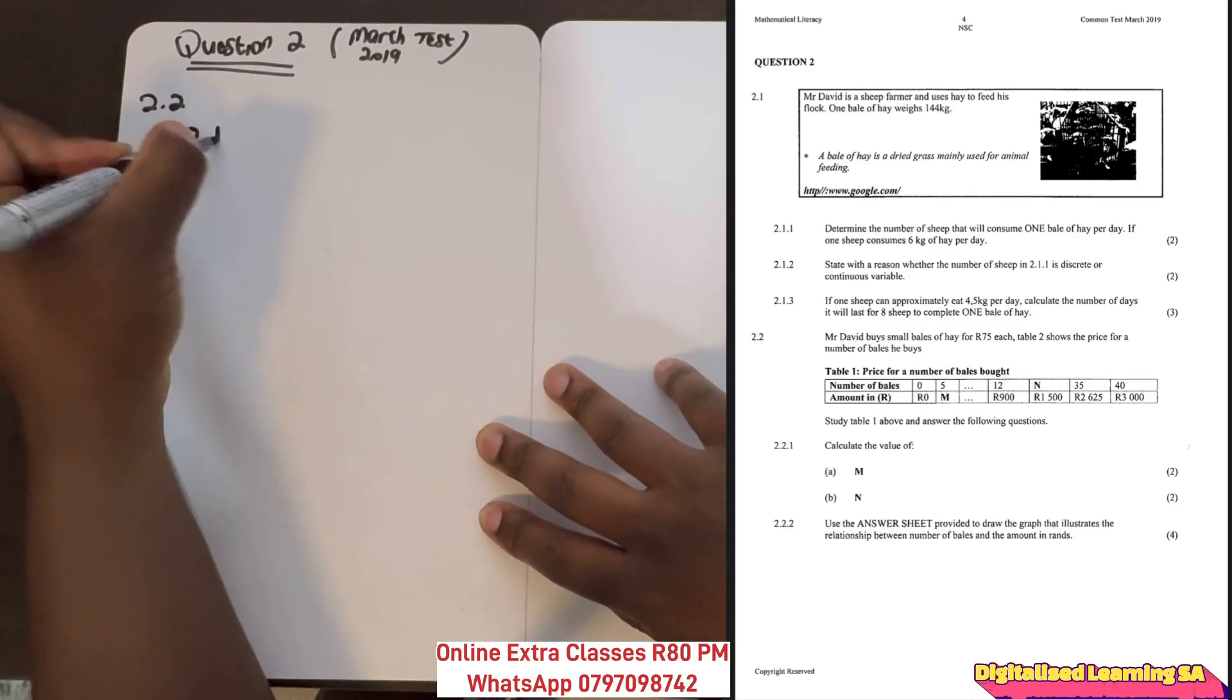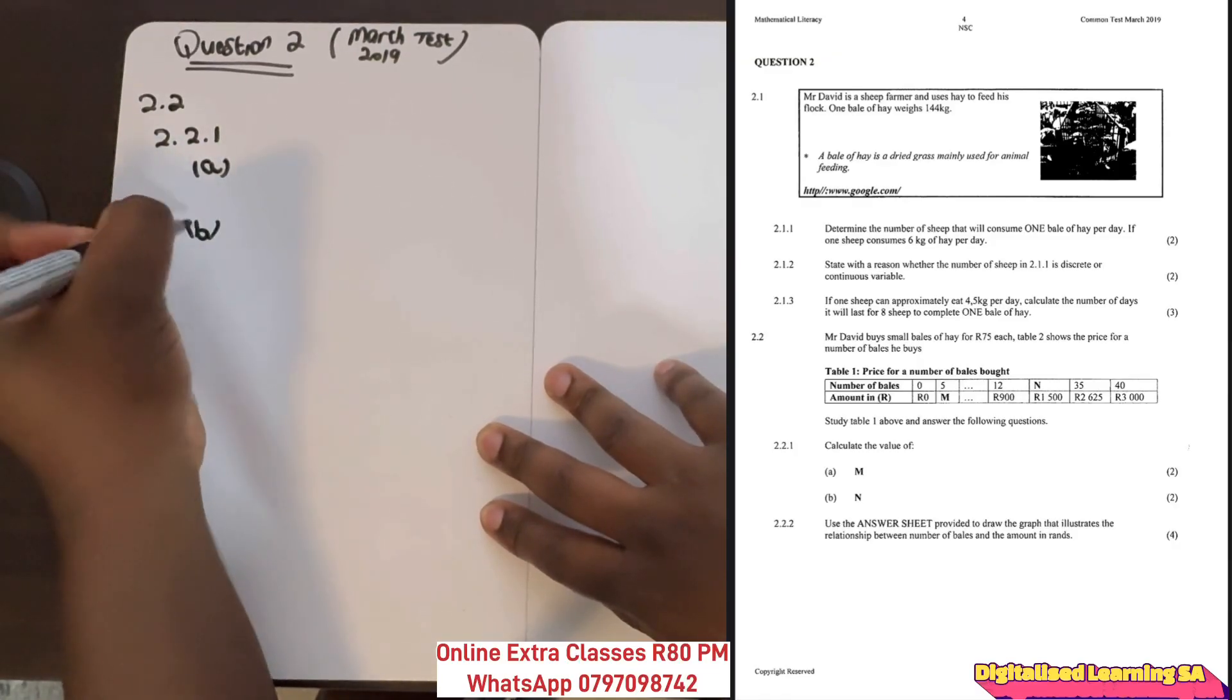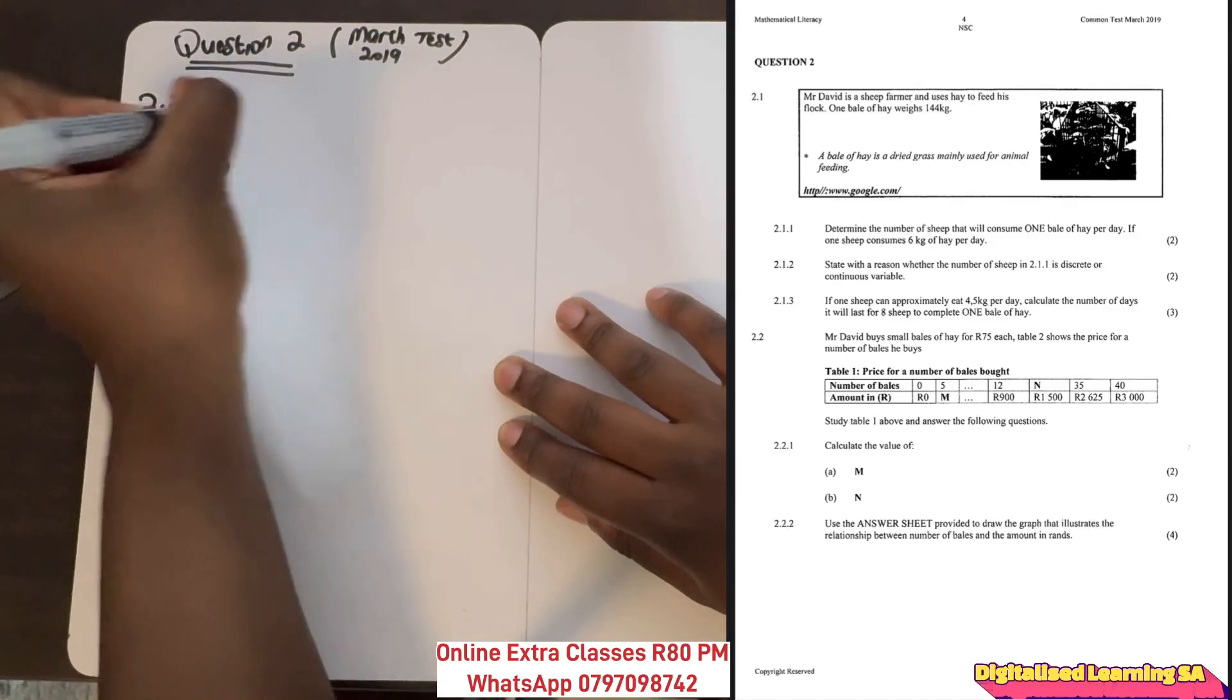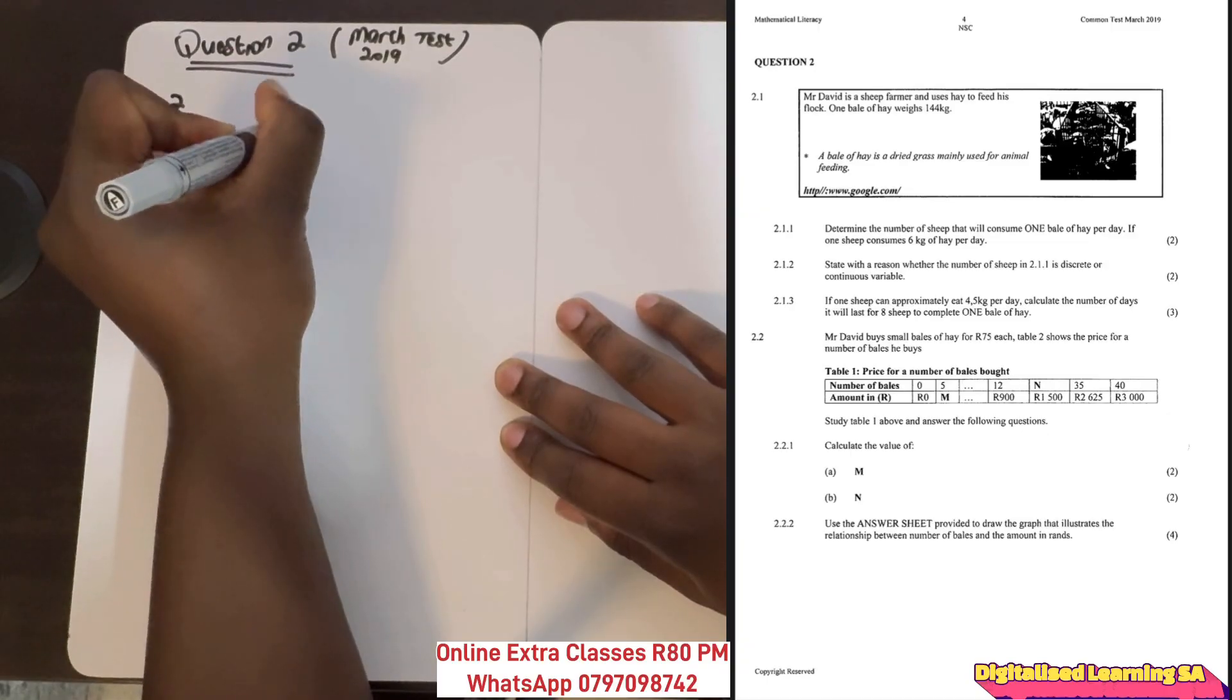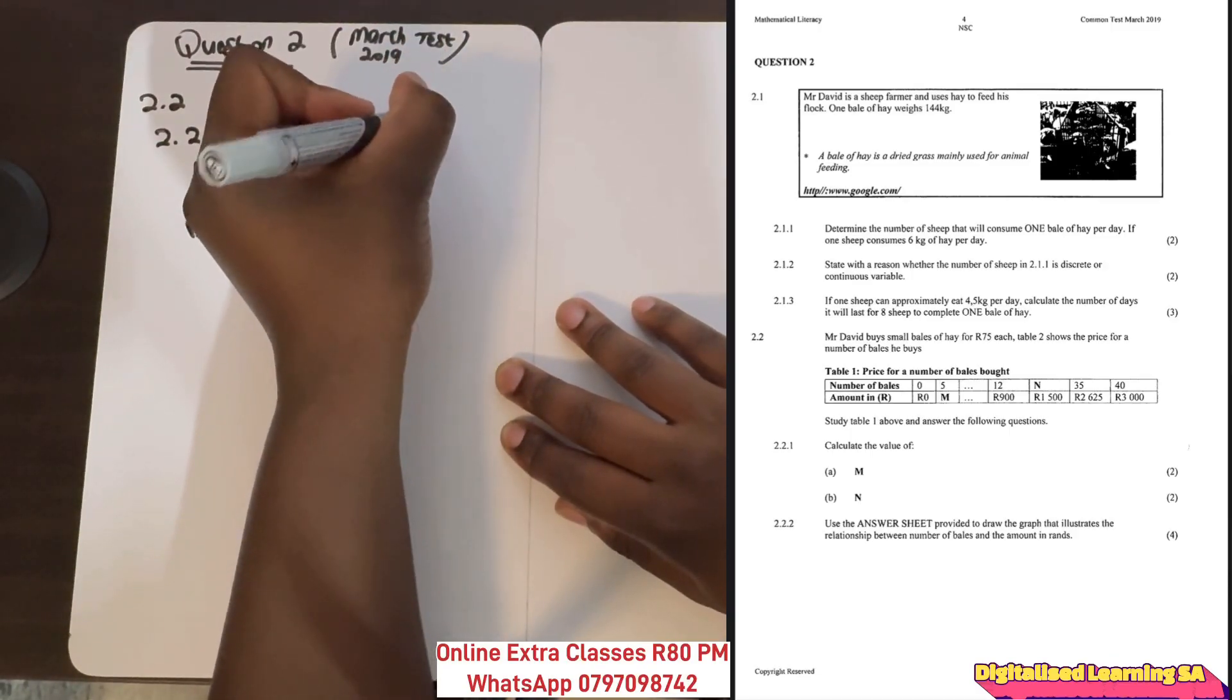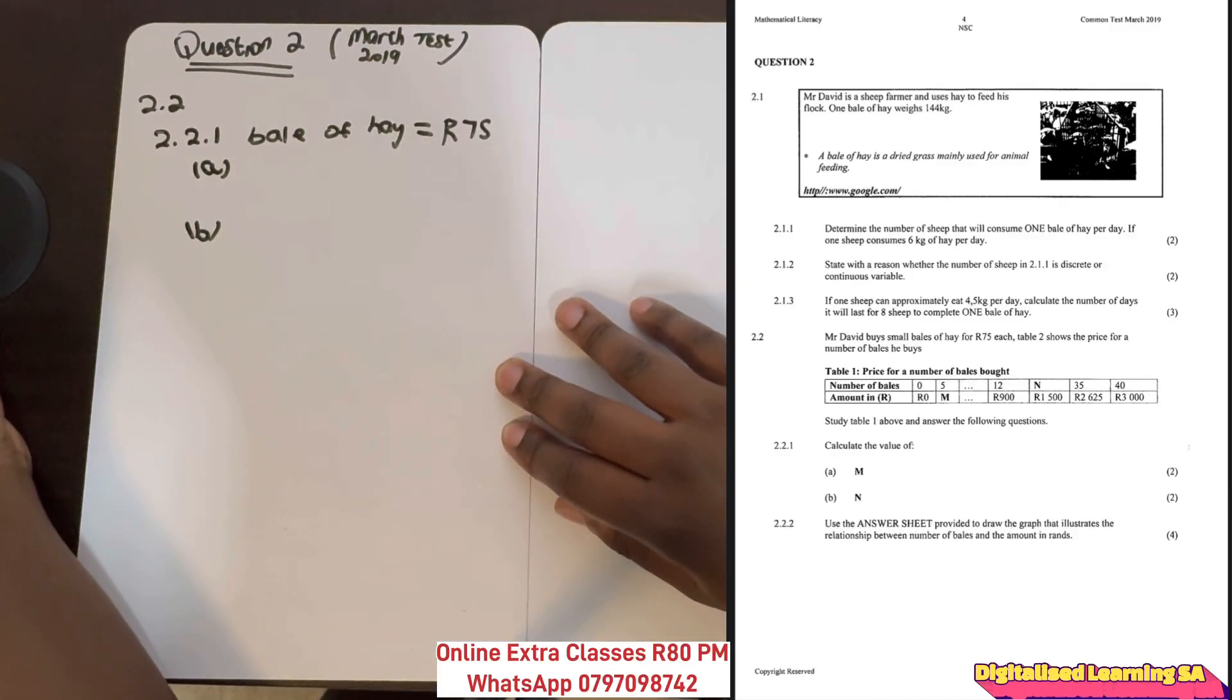The first question is 2.2.1, which has parts a and b. Part a says calculate the value of m. We know that Mr. David buys bales of hay, and that one bale costs 75 francs. The question asks us to calculate the value of m.